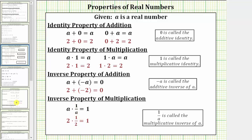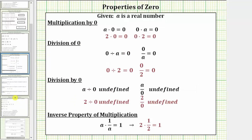Finally, we have the multiplication by zero property, which is given as a times zero equals zero, or zero times a equals zero. Whenever we have a product involving zero, the product is always zero due to the multiplication property of zero.